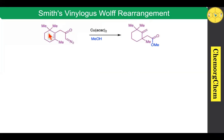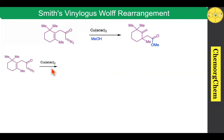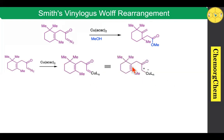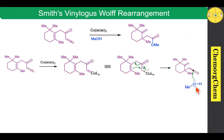Next we move on to the final application: the Smith-Doering-Wolf rearrangement. When you take this substrate and use copper acetylacetonate in the presence of methanol, it readily produces the corresponding rearranged product. When you use copper acetylacetonate, it readily produces the corresponding copper carbene complex. After formation of the copper carbene, the pi electrons readily attack the positive center; at the same time this electron migrates to this carbon center, which produces the corresponding ketene intermediate. The ketene intermediate then reacts with methanol — methanol attacks this center — which readily produces the corresponding rearranged product.